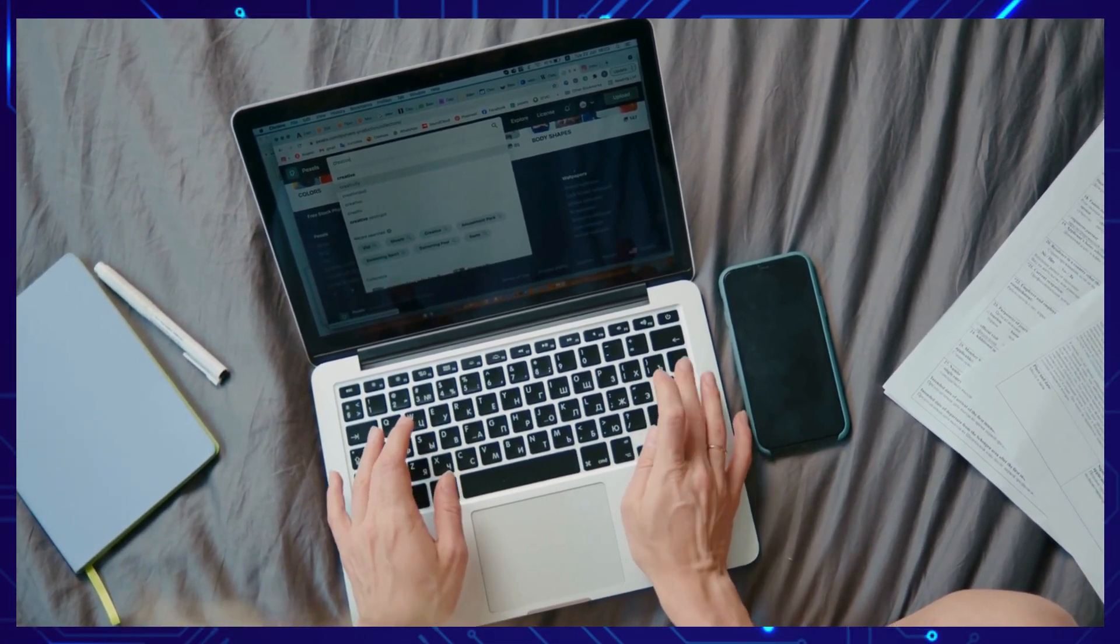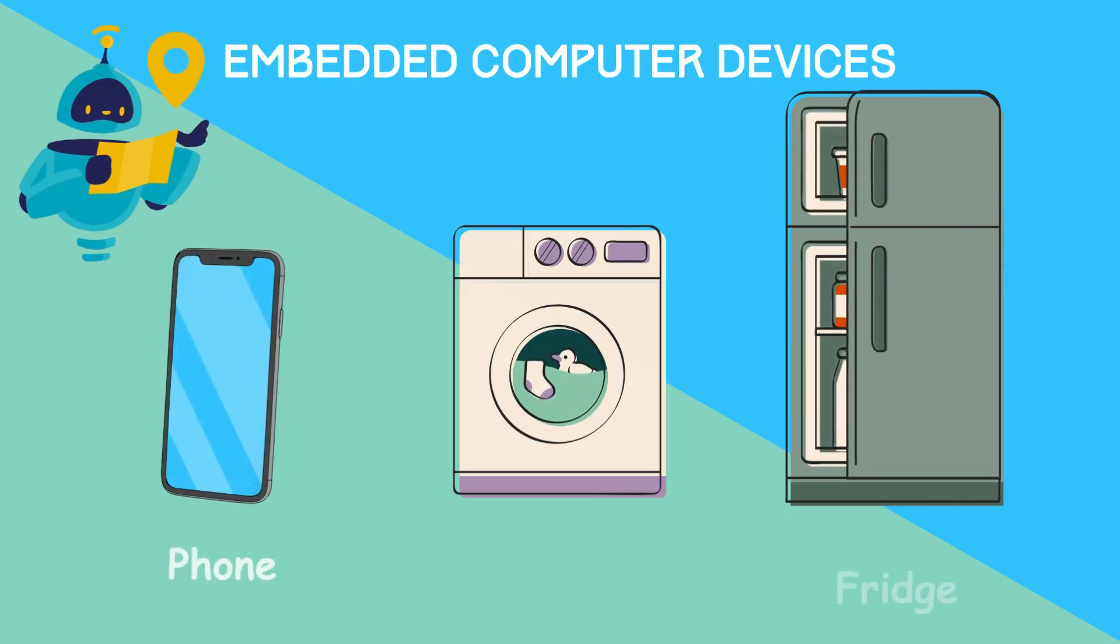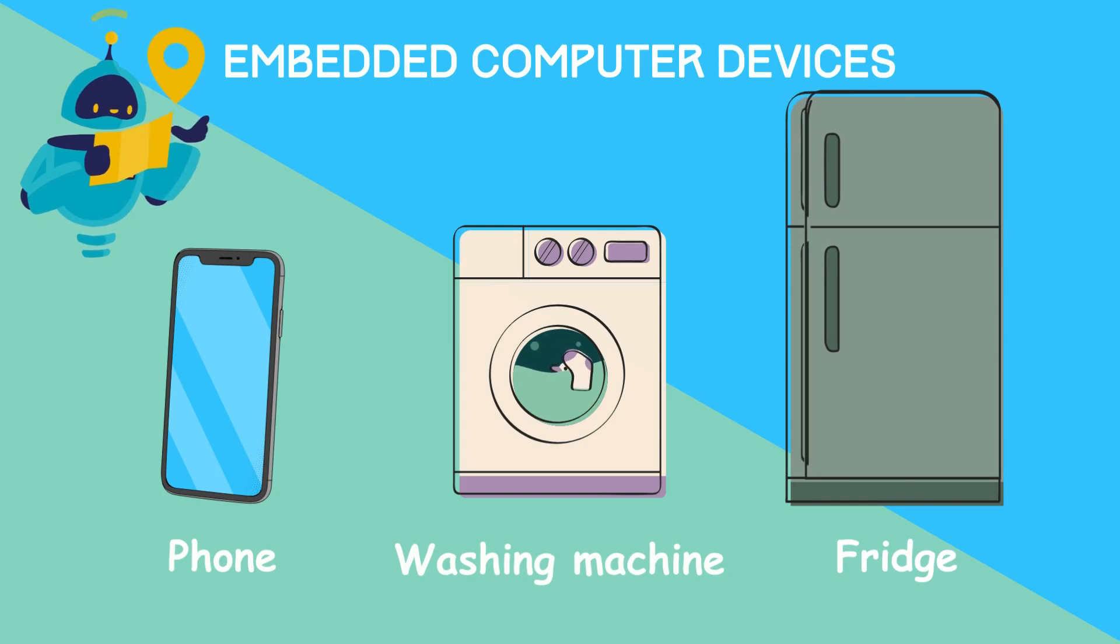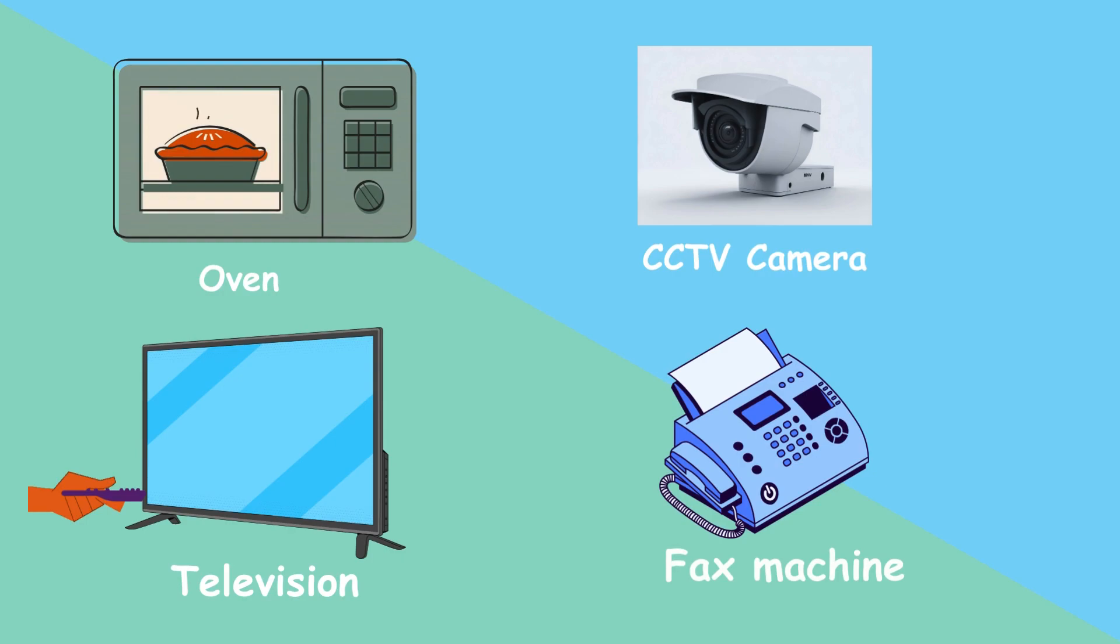Most of the devices we see in our daily lives were created using computer programs. For example, mobile phones, washing machines, televisions, fax machines, ovens, fridges, and CCTV cameras are operated by computer programs. Computer programs included in such devices are called embedded computer systems.